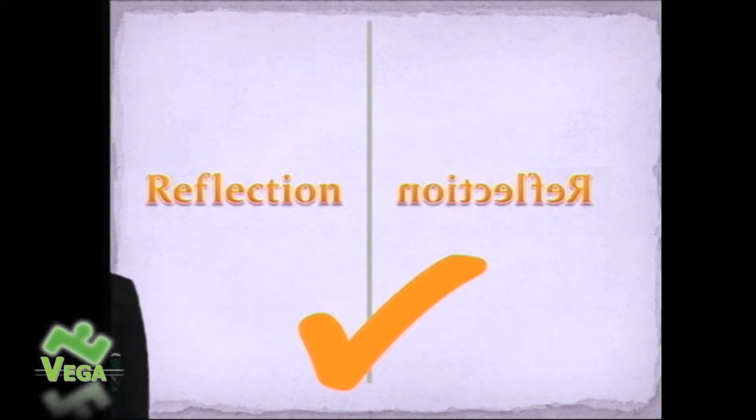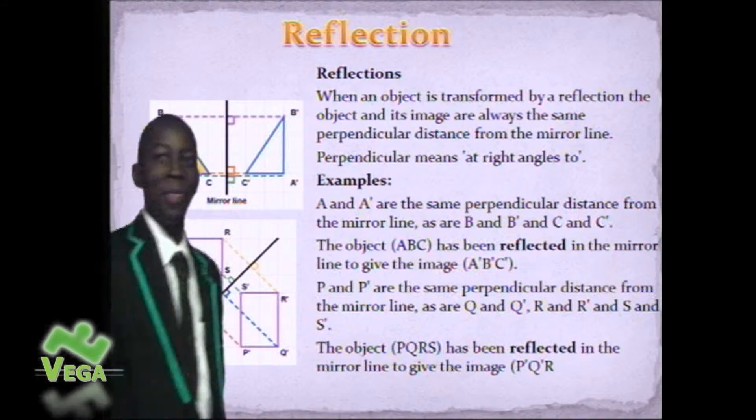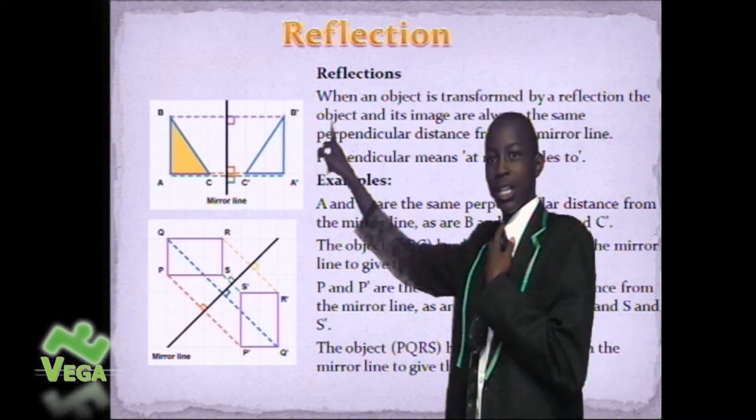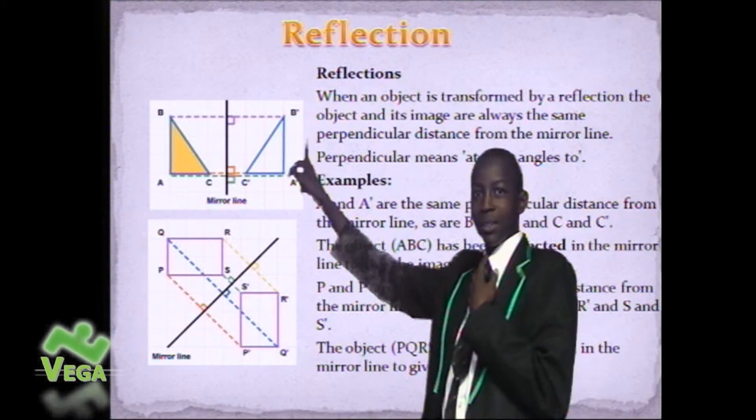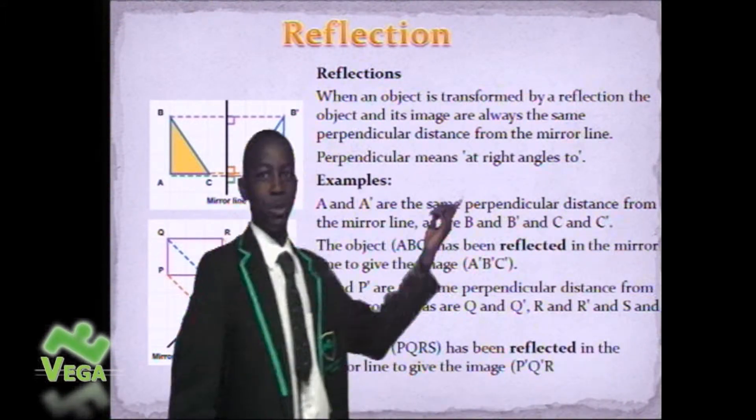We'll be talking about reflection. When an object is transformed by a reflection, the object and its image are always the same perpendicular distance from the mirror line. Perpendicular means at right angles to.